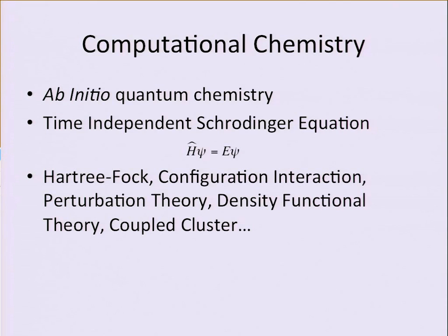For the last 80 years, quantum chemists have developed a hierarchy of methods to solve the electronic Schrödinger equation approximately. Our starting point for a lot of what we do is Hartree-Fock. The reason the time-independent Schrödinger equation is difficult to solve is electron-electron repulsion interactions. Hartree-Fock accounts for these approximately — each electron sees the average position of all the other electrons — and we use it as a zero-order solution.